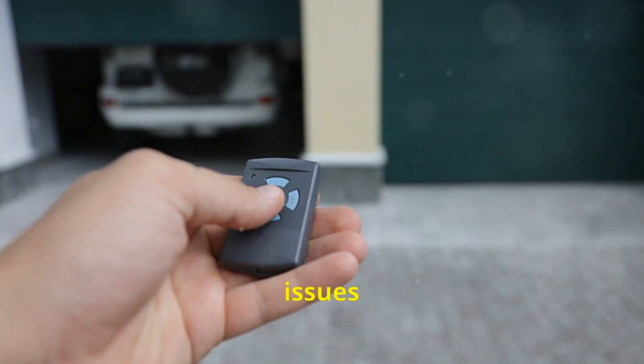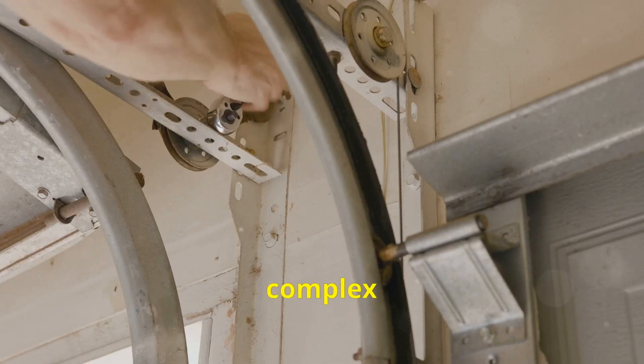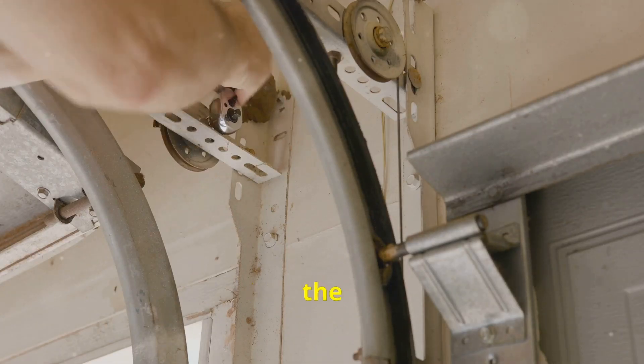Is your garage door remote acting up in the Wollongong area? Remote control issues are common and can arise from simple problems like dead batteries or more complex issues such as interference or the need for reprogramming.